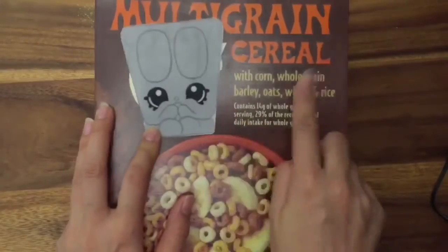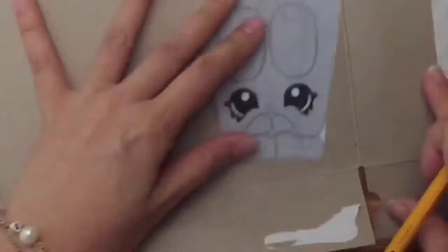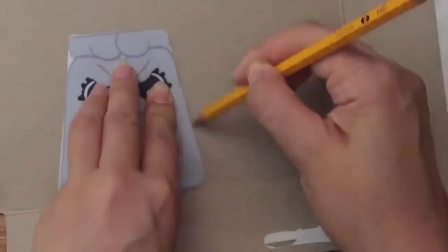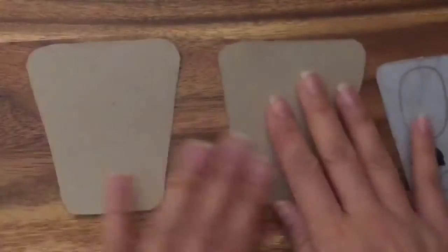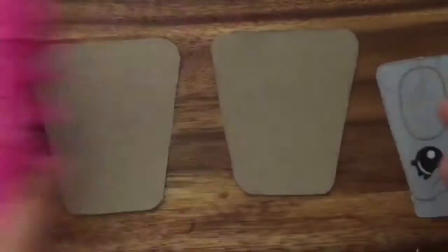After you have your Shopkin cut out, you will use this as a template to cut out two identical pieces on your cereal box. Now that you have the front and back of your pinata, you need the sides.